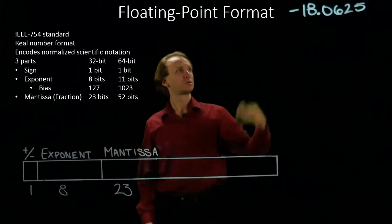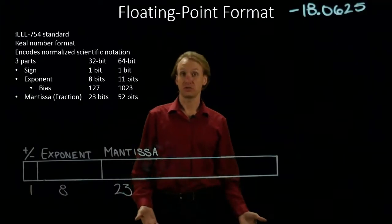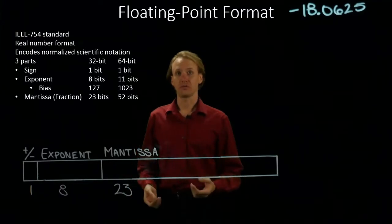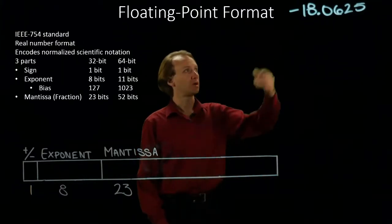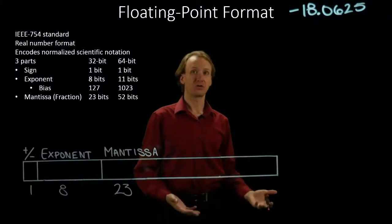This time I'm going to convert negative 18.0625 into the floating point format. The first step is to convert this number into its binary equivalent.